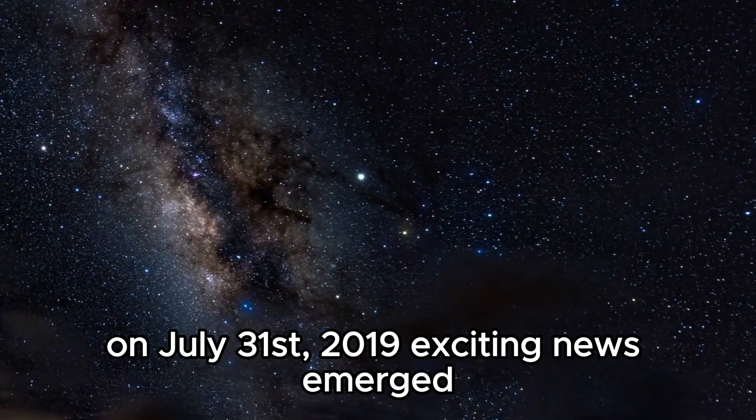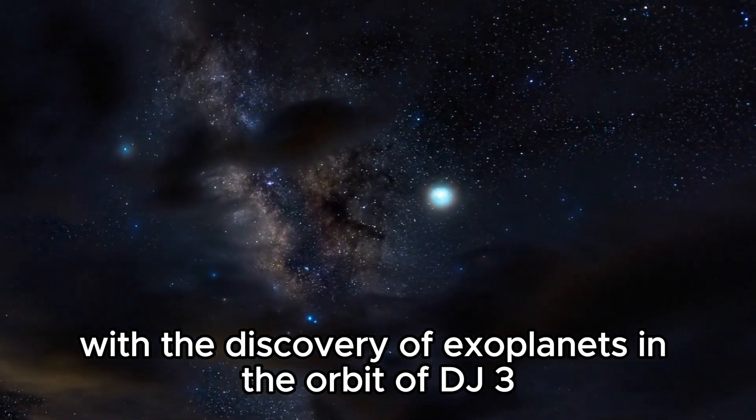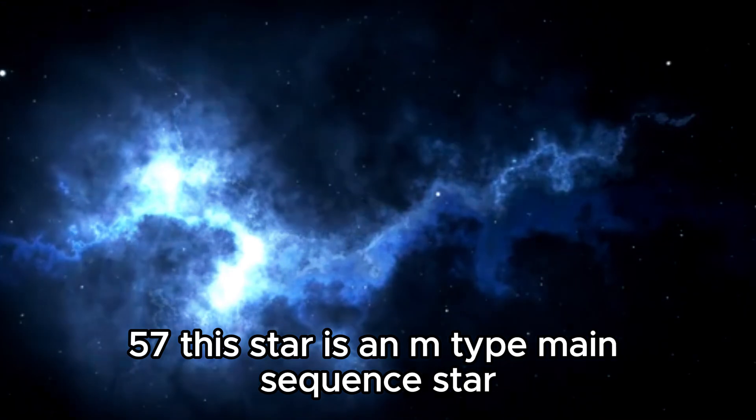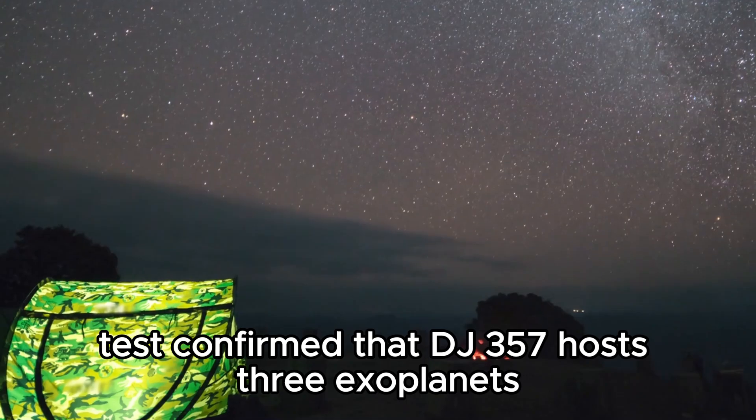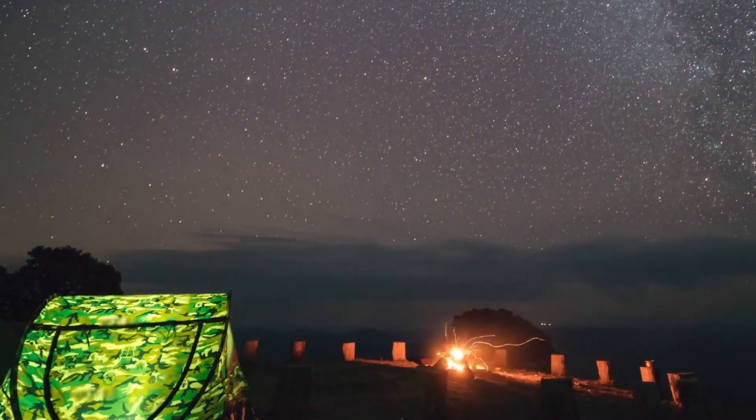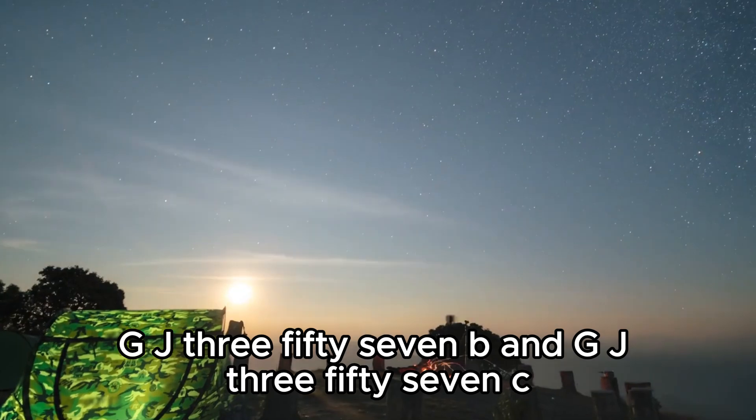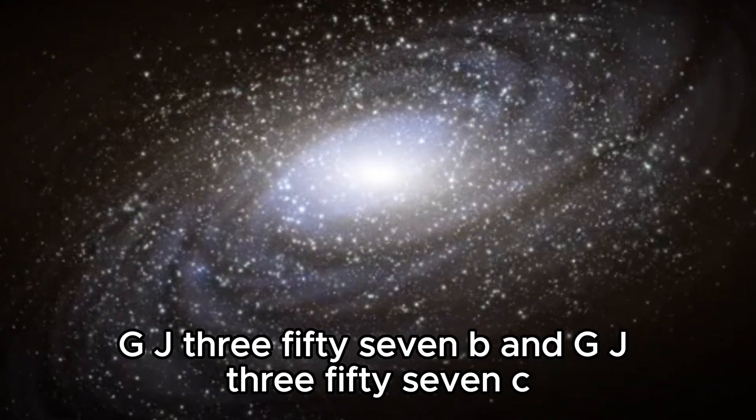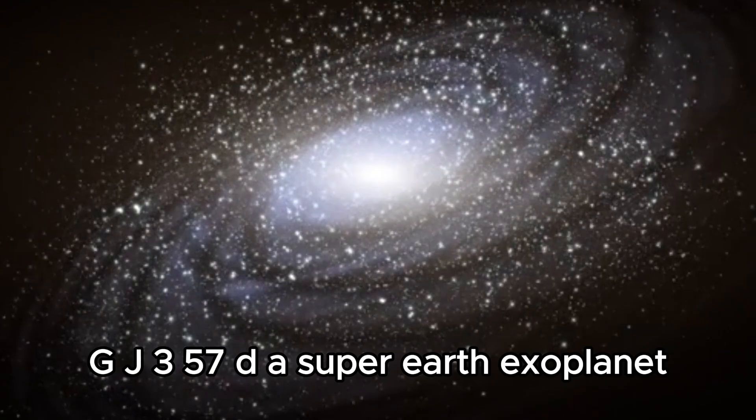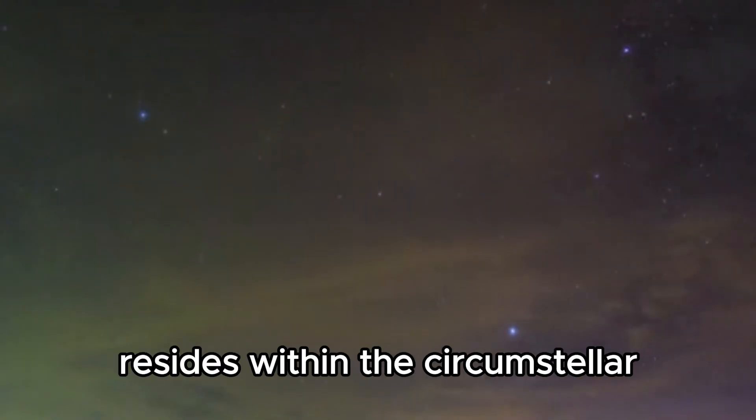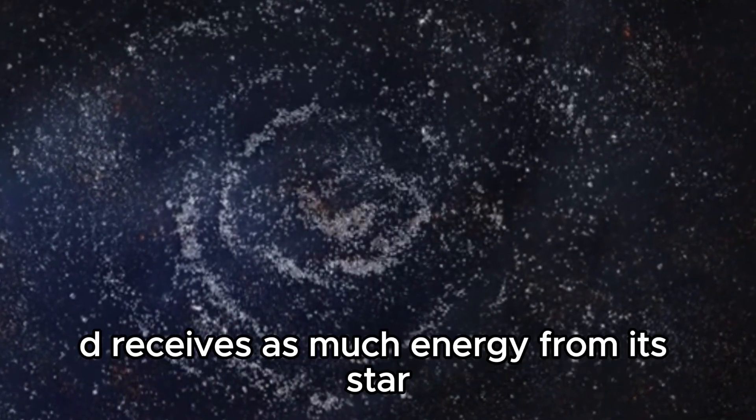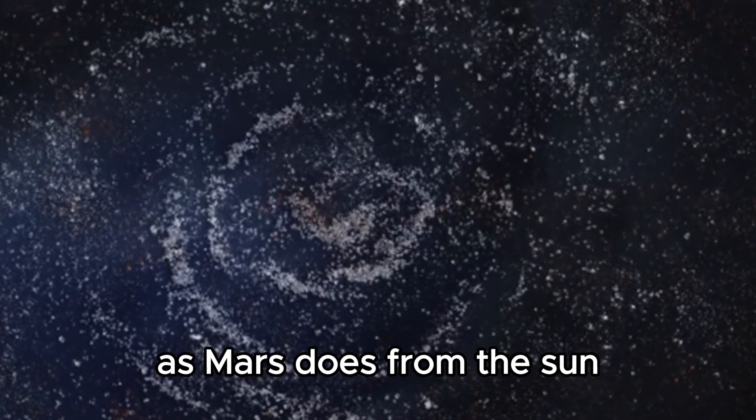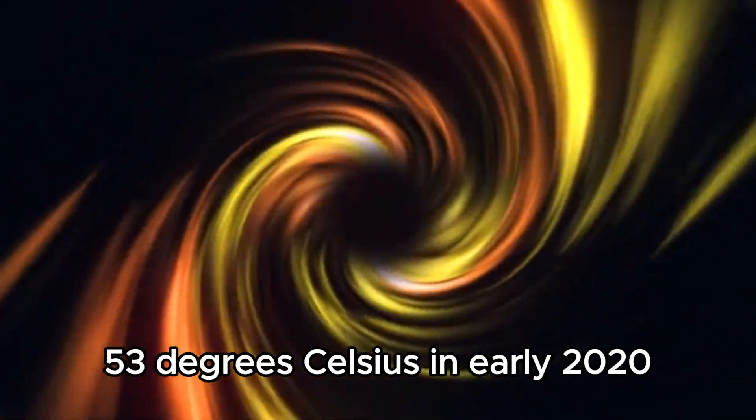On July 31, 2019, exciting news emerged with the discovery of exoplanets in the orbit of GJ357. This star is an M-type main sequence star about 31 light-years away in the constellation Hydra. TESS confirmed that GJ357 hosts three exoplanets: GJ357d, GJ357b, and GJ357c. GJ357d, a super-Earth exoplanet, resides within the circumstellar habitable zone of its parent star. It is six times more massive than Earth and twice the Earth size. GJ357d receives as much energy from its star as Mars does from the Sun and has an average temperature of minus 53 degrees Celsius.